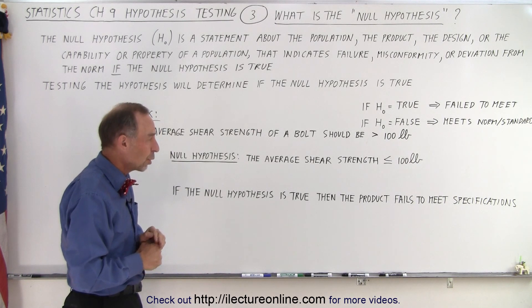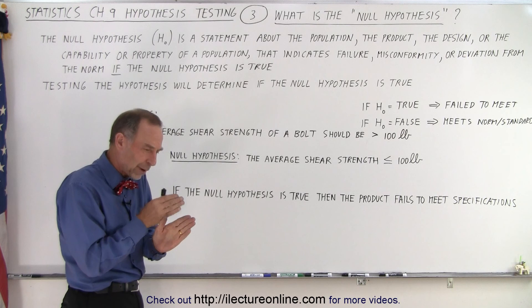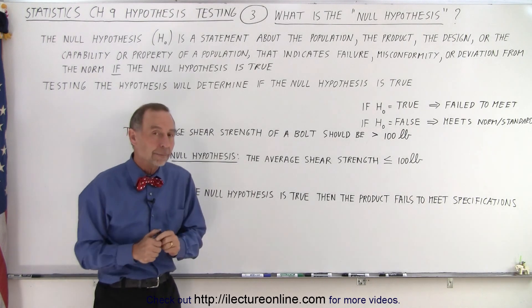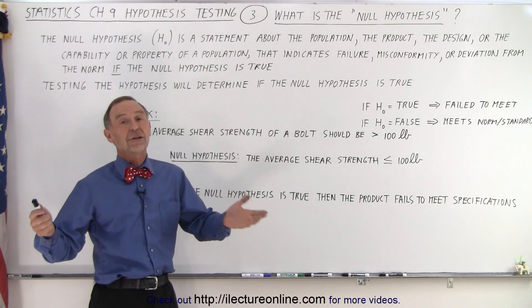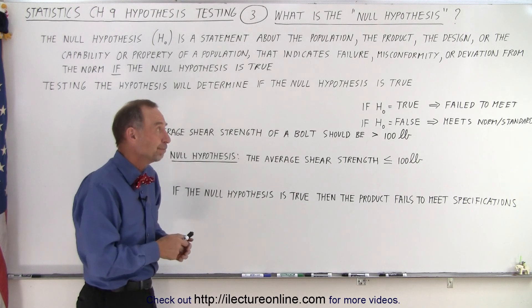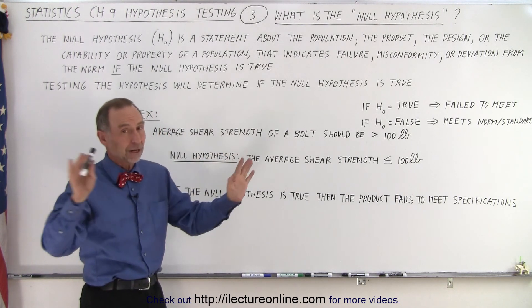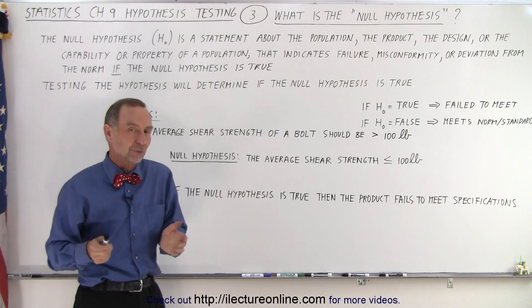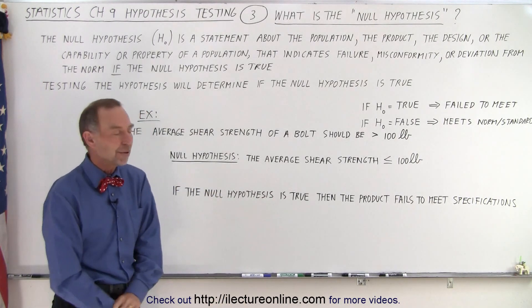So we always look for the very limit of where it doesn't meet specification or expectation or the norm, and that is then our null hypothesis. And then we go ahead and try to test for the hypothesis, see if the null hypothesis is true or not. If it's true, the product fails to meet the expectations. If it's false, it meets the norm or the standards expected or the values expected to be found.